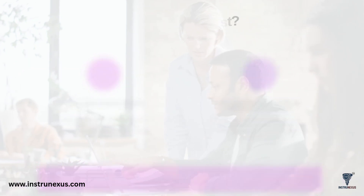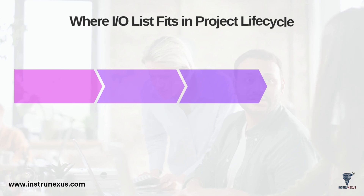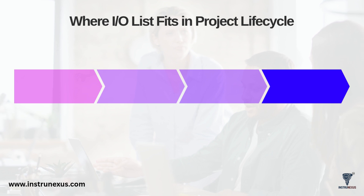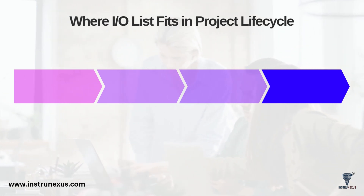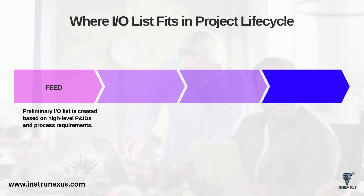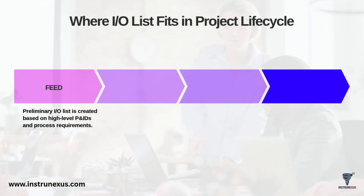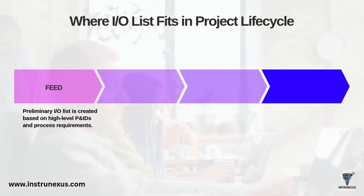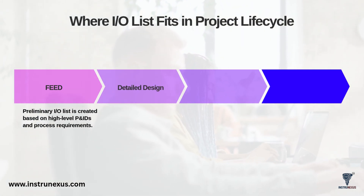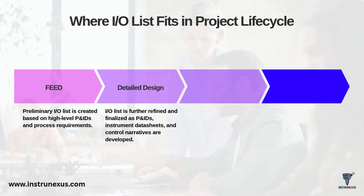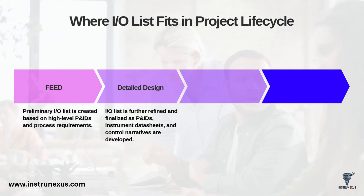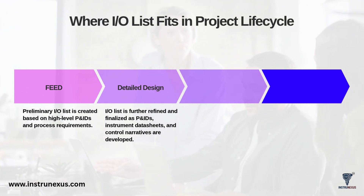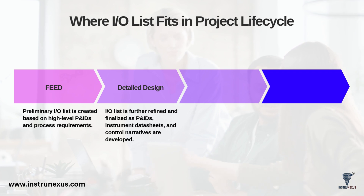The IO List isn't a document that's created once and then finished. It's a living document that evolves throughout the entire project lifecycle. It begins in the FEED stage, or front-end engineering and design, where a preliminary IO List is created based on high-level P&IDs and the initial process requirements. Next, during detailed design, the list is heavily refined and expanded. As P&IDs are finalized, instrument data sheets are approved, and control narratives are written, all of this new detailed information is used to finalize the IO List.